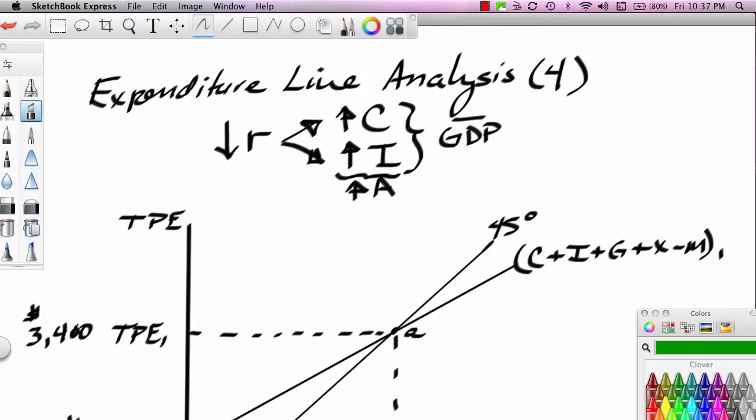Hi, this is Ron Sipsik and this is the fourth part of a four-part series on expenditure line analysis. In this particular segment, we're going to take a look at how an increase in autonomous expenditures leads to an expansion in GDP in the short run and perhaps even a reduction in the cyclical unemployment rate. We begin the analysis by developing a scenario where interest rates have fallen.